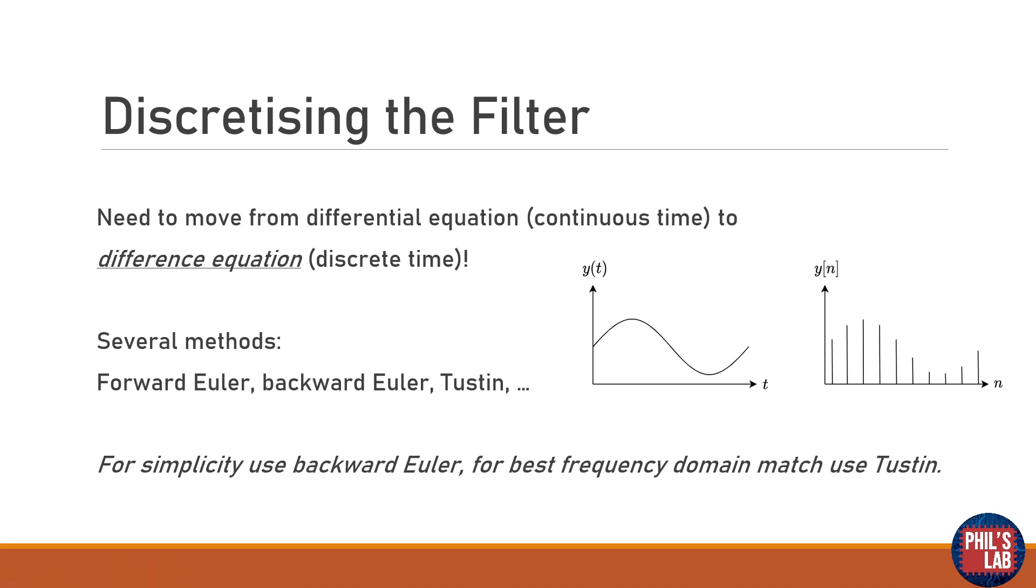There's the forward Euler method, backward Euler method, Tustin and so forth. For simplicity and in this video we're going to be using the backward Euler method and this is really quick to do and really simple. However if you want the best frequency domain match from the analog to the digital domain I'd advise you to use the Tustin transformation.